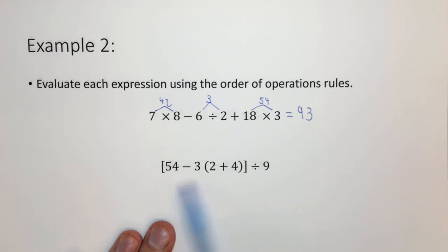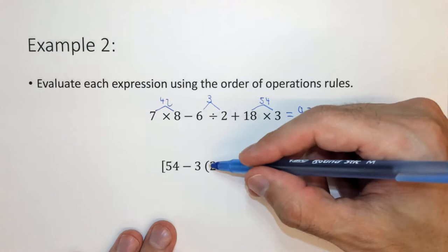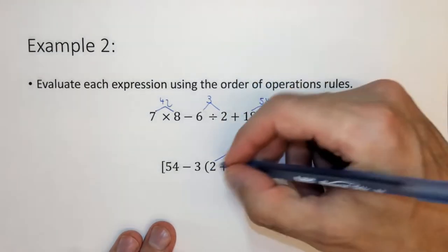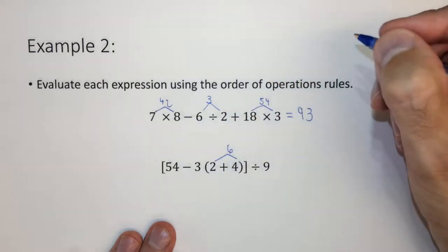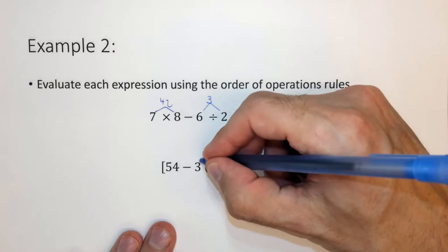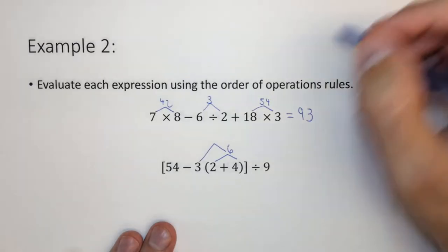This is similar, except here we have two sets of parentheses. One is actually a bracket. So the very first thing we want to do is the thing that's innermost of the parentheses. So this, 2 plus 4, which is 6. We then want to take 2 plus 4, the 6, and multiply it by negative 3.